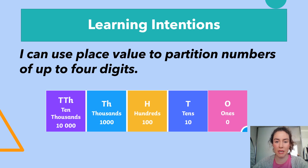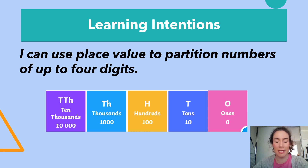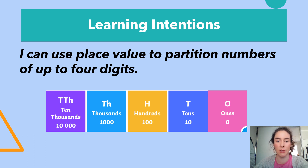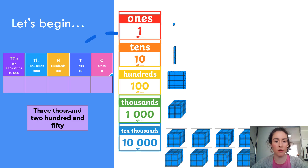This is Tuesday's lesson. Our learning intention for today is: I can use place value to partition numbers of up to four digits. Partitioning a number means breaking it up into different parts. We did that yesterday when we had 1597 and broke it up into 1000 plus 500 plus 90 plus 7.